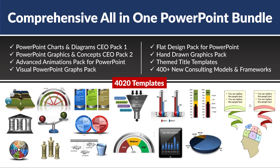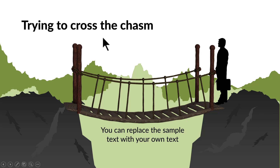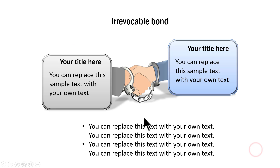The first example of using photos nicely inside our templates is this one, where you can see a vector image combined with elements drawn entirely inside PowerPoint, allowing us to communicate the idea of trying to cross the chasm. Another example is this one — a vector image combined with drawn shapes that communicates the concept of an irrevocable bond.